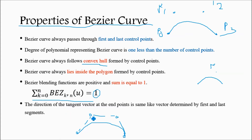The last property is about the direction of the tangent vector. The direction of the tangent vector at the end points is the same as the vector determined by the first and last segment. So those are the properties of the Bezier curve.